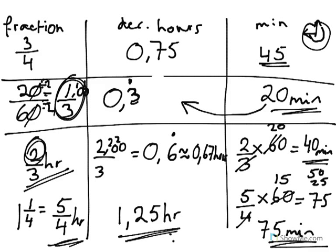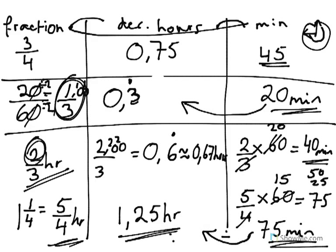To summarise: to change from a fraction to a decimal, just do the division. To change from decimal hours to minutes, it's actually easier to change from fraction hours to minutes by multiplying the fraction by 60. To go backwards from minutes to hours, divide by 60. To go from decimal hours to fraction hours, look at the last decimal place — for example, 1.25 is the same as 1 and 25 one-hundredths, which simplifies to 1 and a quarter.